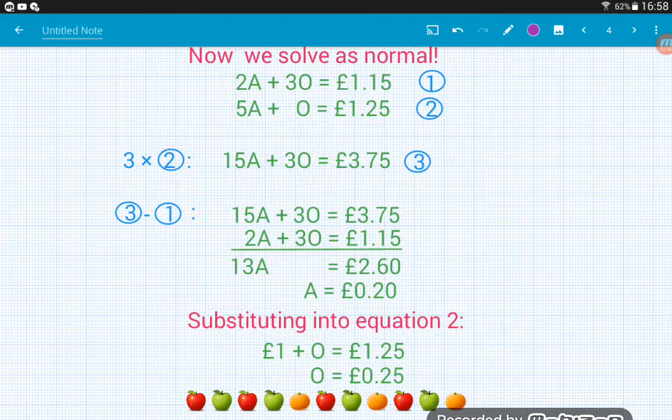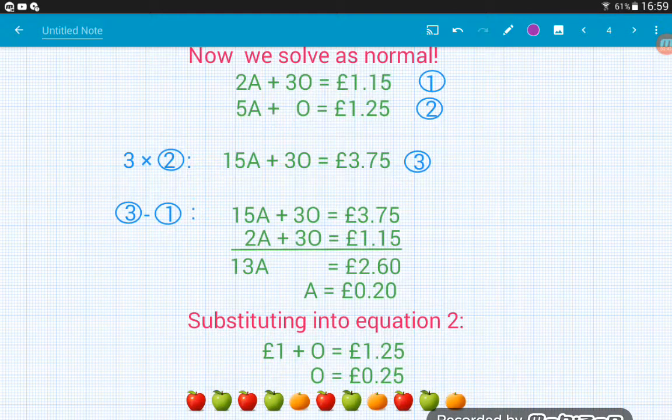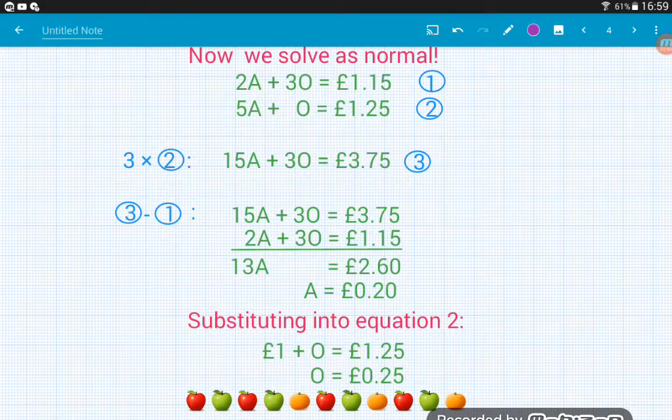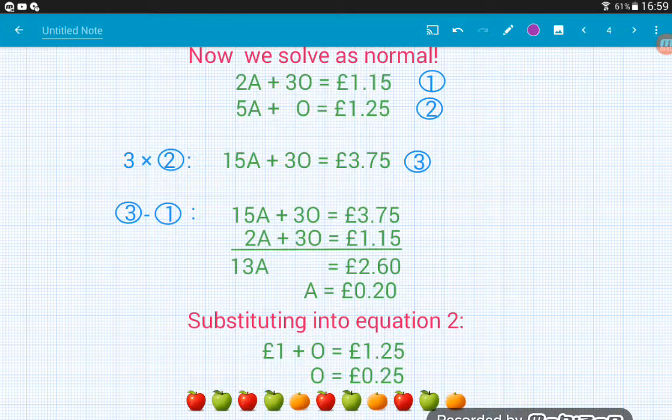So once we know how much an apple is, we can substitute that back into one of the original equations. I've put it into equation two here. So five lots of 20p is a pound. So one pound add one orange is worth £1.25. Take the one pound away and we get an orange is 25p. Job done. Let's look at some more.